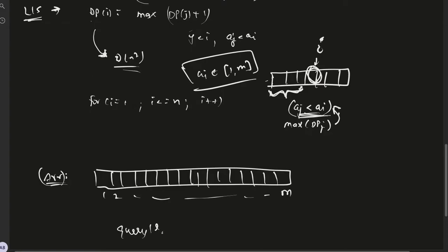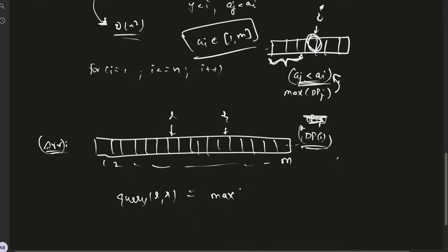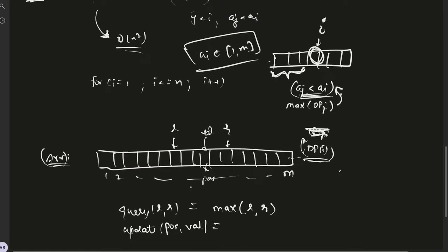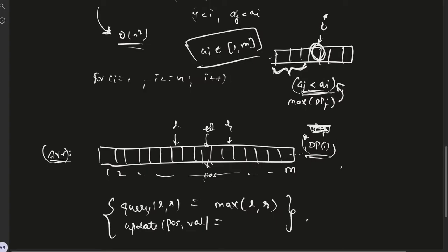Query L to R in this array would mean give us the maximum value, and all these elements store the dp[i] values. Query L to R means the maximum value present in the range L to R. Update position with value means update this position with value val. This is the structure we'll be using for segment tree on values.